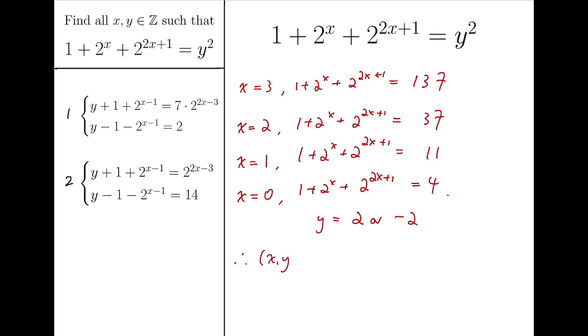So here we are. The final solutions are 0 and plus or minus 2, and 4 plus or minus 23. And these are all the solutions.